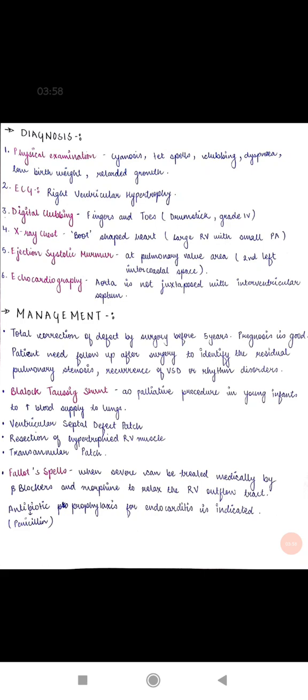First one is BT shunt, Blalock-Taussig shunt or it can also be called BTT shunt that is Blalock-Thomas-Taussig shunt. It is a palliative procedure in young infants to increase blood supply to the lungs.